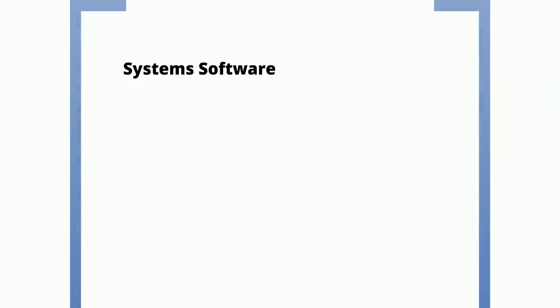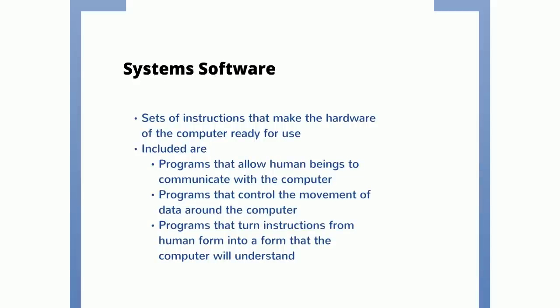The other type of software we need to know about is system software. This is sets of instructions that make the hardware of the computer ready for use. This includes programs that allow humans to communicate with the computer, programs that control the movement of data around the computer, and programs that turn instructions from human form into a form that the computer will understand. There's more detail on system software and application software in another video later on in the specification.